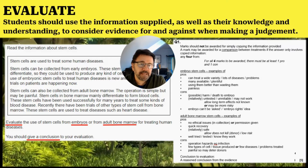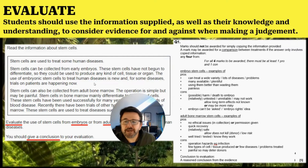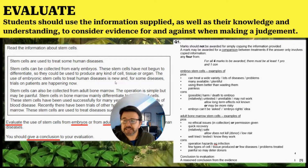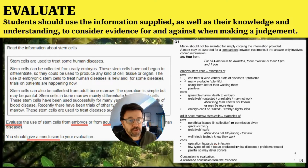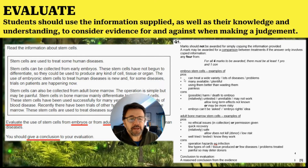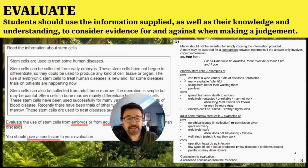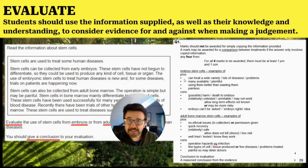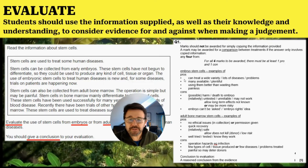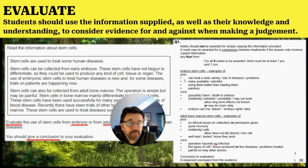Looking at the answers for embryo stem cells: the information tells us stem cells have not begun to differentiate, so they could be used to produce any kind of cell, tissue or organ. Pros: they can treat a wide variety of diseases because any type of cell can be produced; there are lots available; using them is better than wasting them since they usually come from IVF treatment; and it's painless. Cons: the key one is death to the embryo; it's untested and unreliable with no actual usage at the moment; and the embryo has rights and cannot give its consent. You only need one pro and one con.